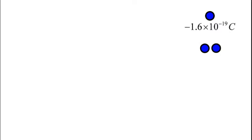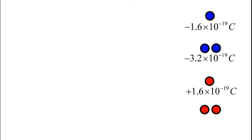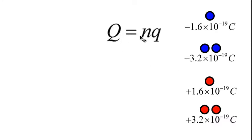If we have two electrons, we're going to have two multiplied by that value, which gives us minus 3.2 times 10 to the power of minus 19 coulombs. If we have a proton, a proton has a charge equal to that of an electron but with a different sign. So the proton has a charge of 1.6 times 10 to the power of minus 19. If we have two protons, we get 3.2 times 10 to the power of minus 19 coulombs.